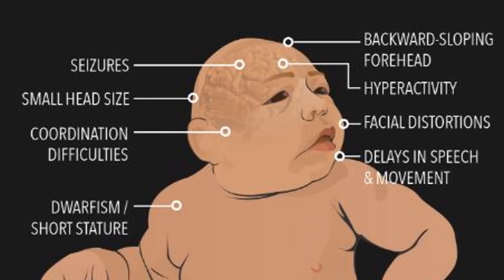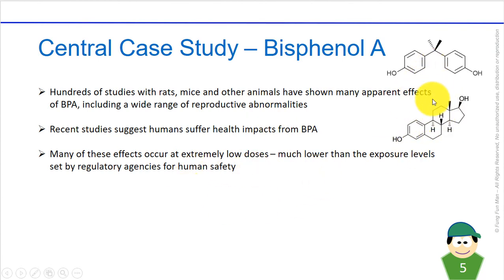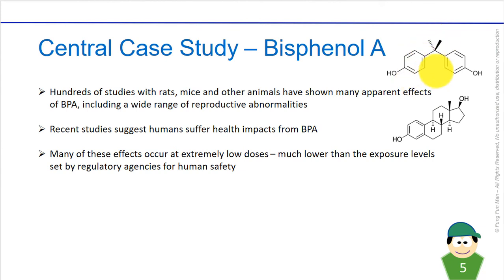Recent studies suggest that humans also suffer health impacts from BPA. Many of these effects occur at very, very low doses — much lower than the exposure levels set by regulatory agencies for human safety. Scientists say this is because BPA mimics the female sex hormone estrogen. The structure of BPA is quite similar to estrogen: BPA has two benzene rings separated by a rotatable sp3 carbon, while estrogen has one benzene ring in a conjoined four-fused six-membered ring system. Similarly, BPA can fit into hormone receptor proteins using a key-and-lock model. Hormones like estrogen function at minute concentrations, and when synthetic chemicals of similar structure are present at similarly low concentrations, they can trick the body into responding.